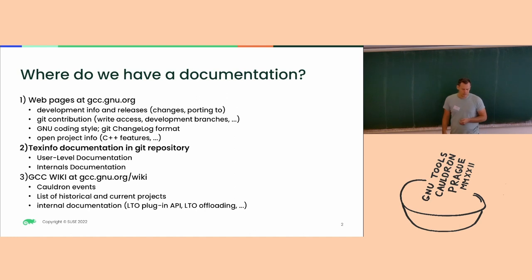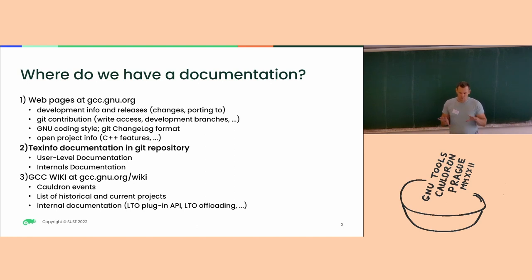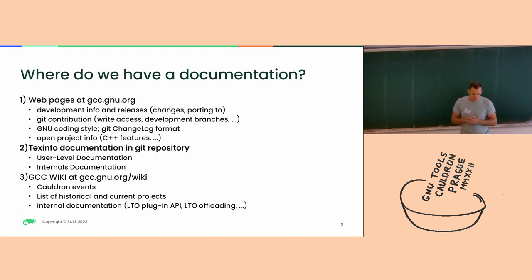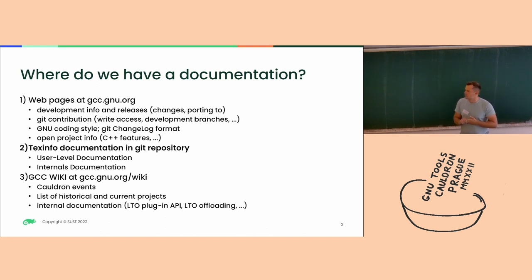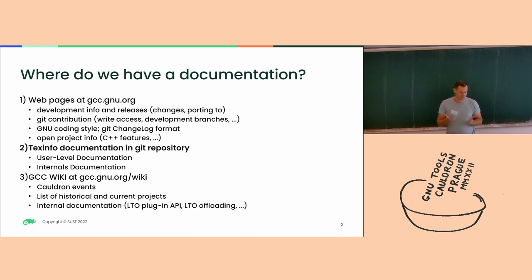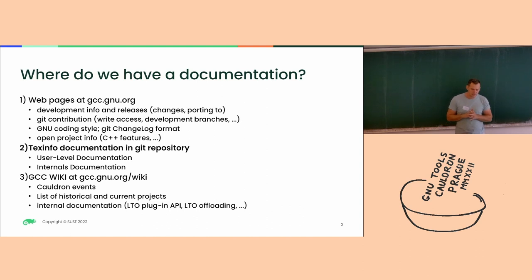The second part, which I'm mainly interested in, is the texinfo documentation, which contains two parts. The first one is the user-level documentation — the documentation which GCC consumers or people who use it visit most often. The second part is for developers who would like to know the internals of GCC and how to write a new port or a new pass. And the last part is the GCC wiki, which also contains information about projects mainly.